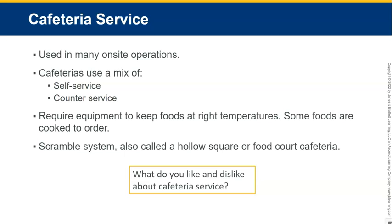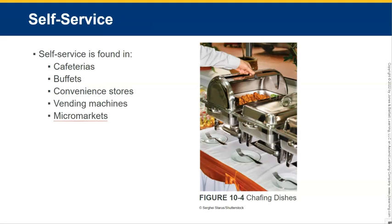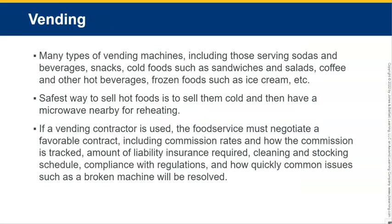For cafeteria service, it is used in many on-site operations and may use a mix of self-service and counter service. They require equipment to keep foods at the right temperatures; some foods are cooked to order. The scramble system, also called a hollow square or food court cafeteria, is like a university cafeteria — with a salad bar, soup bar, dessert bar, beverages, grill, and pizza station. That entire setup is a scramble system, with the kitchen behind it all. Self-service is found in cafeterias, buffets, convenience stores, vending machines, and micro markets — it means the person eating fixes whatever portion they want onto their plate.